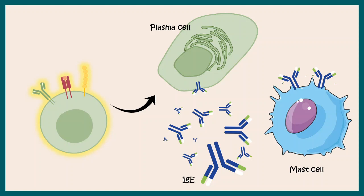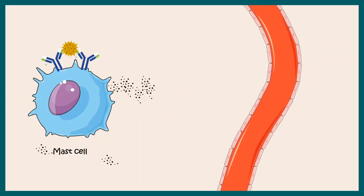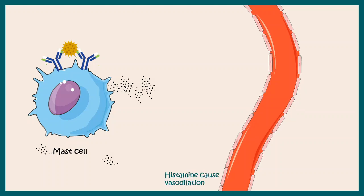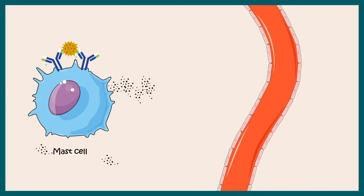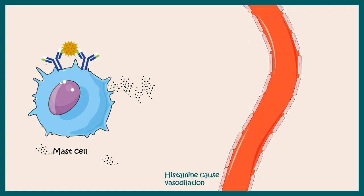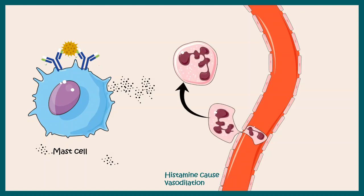IgE antibodies can bind to the surface of mast cells, and this is called the sensitization phase — the mast cells are becoming sensitized. When there is a second exposure to these allergens, as may happen multiple times in a season, the mast cell degranulates and secretes several chemokines in its surroundings. One such chemokine is histamine, which leads to vasodilation — that means dilation of the capillaries. This vasodilation leads to extravasation, or movement of several immune cells into the inflamed area, such as the neutrophil shown in the diagram.